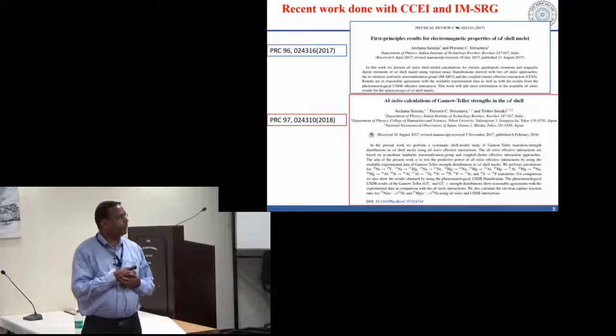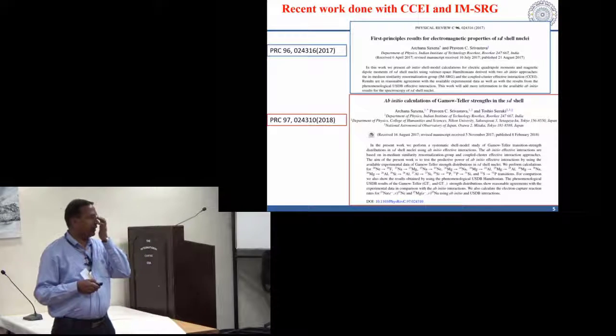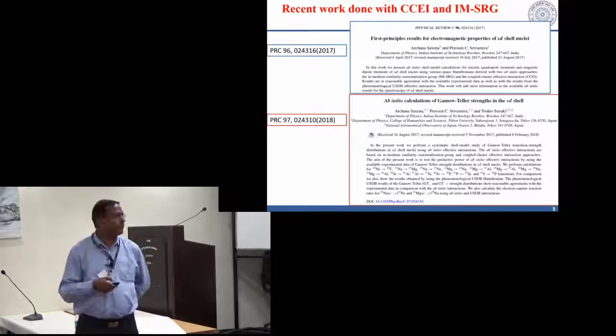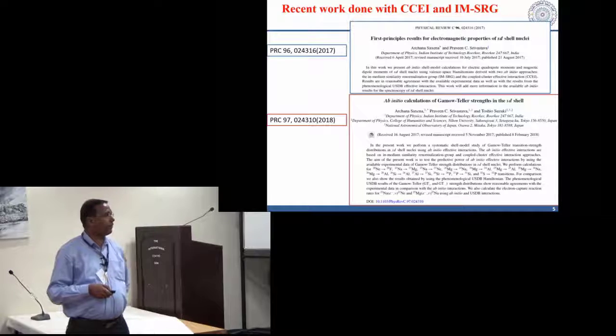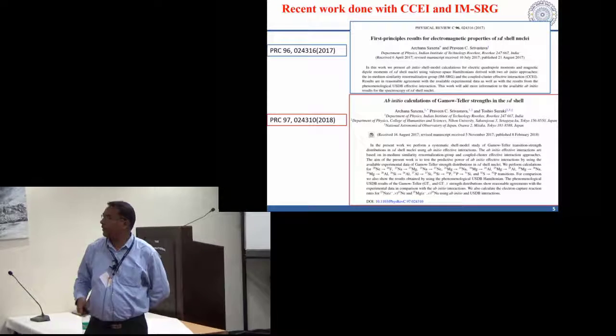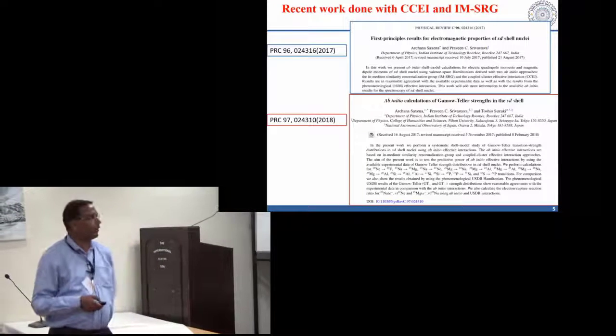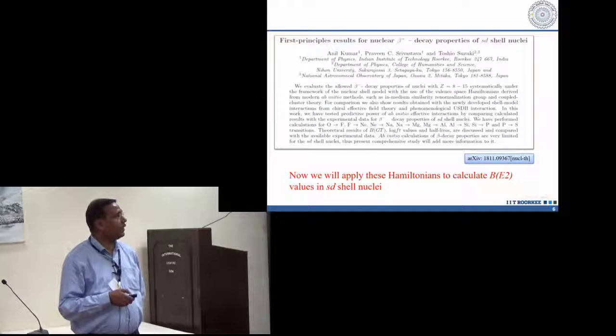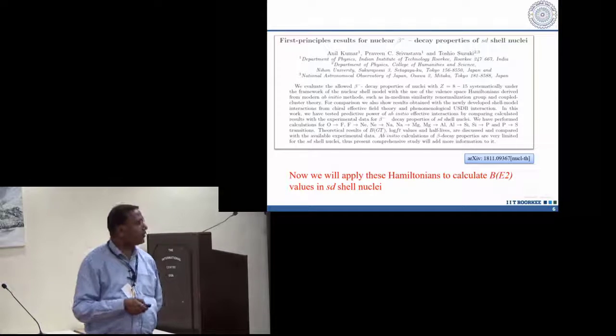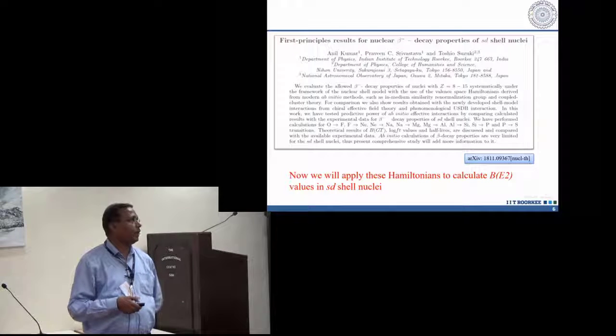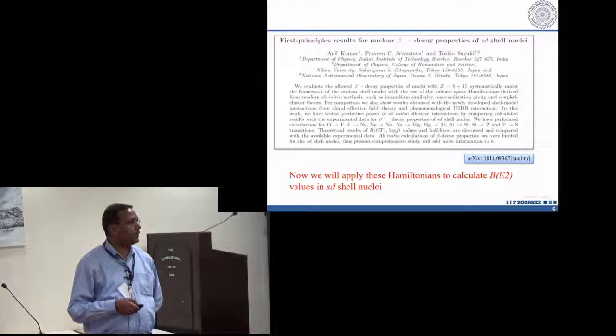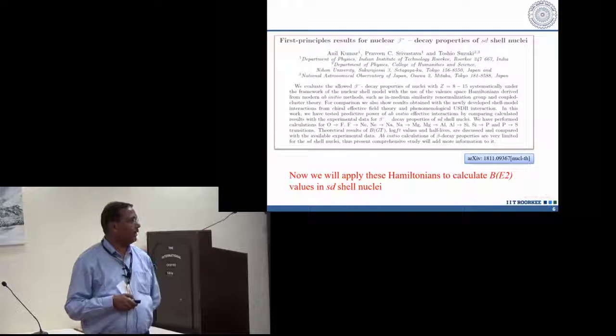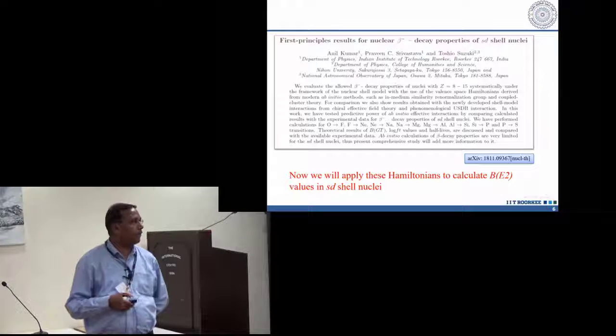We use this for the electromagnetic property for the SD shell nuclei. We cover here the whole SD shell and I will show you some results. For 13 SD nuclei, we discuss the Gamow-Teller strength, how it is working, how to get log FT value and other things. If we look at all these results, we can see how the log FT value and BGT value we are getting if you use the ab initio interaction in the case of SD shell nuclei.